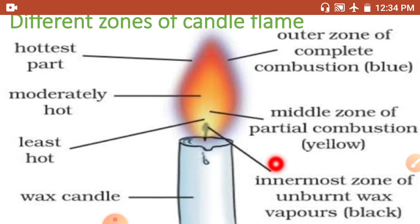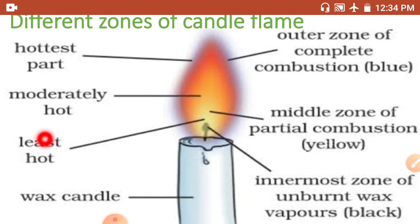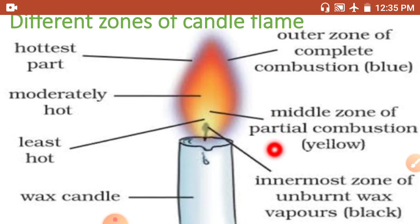The innermost zone is black in color and is the least hot part of the flame. In this zone, unburned wax vapors are found. These are the three zones of a candle flame.